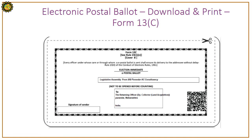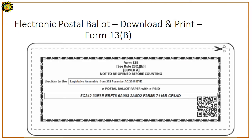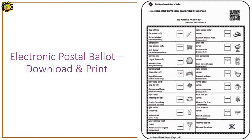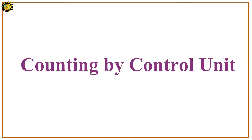The commanding officer must download and print Form 13C (large envelope), Form 13A (declaration), Form 13B (inner envelope), and the electronic postal ballot paper. The formats for all these documents are shown on screen.